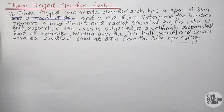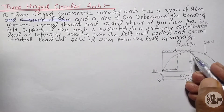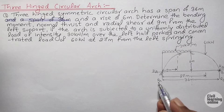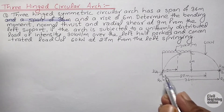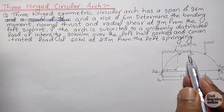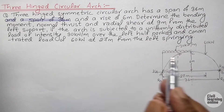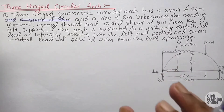Let us draw the diagram and begin the solution. I have drawn the 3-hinged circular arch whose crown is at 6 meters, represented by point C. The supports A and B carry vertical reactions RA and RB respectively, and horizontal forces HA and HB. The arch carries a UDL of 30 kN/m over the left half span and a point load of 60 kN at 27 meters from the left support A.